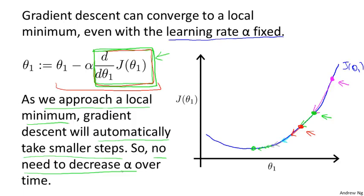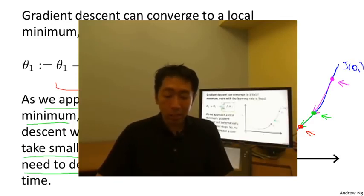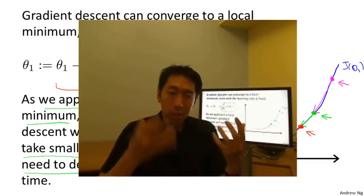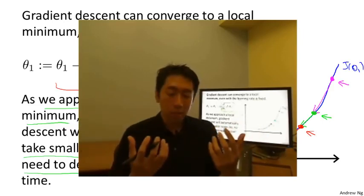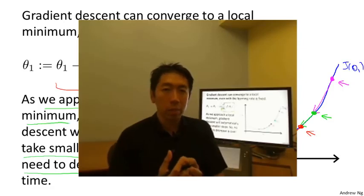That's the gradient descent algorithm. You can use it to minimize any cost function j, not just the cost function we defined for linear regression. In the next video, we're going to set j back to be linear regression's squared cost function. Taking gradient descent and the squared cost function together will give us our first learning algorithm — the linear regression algorithm.